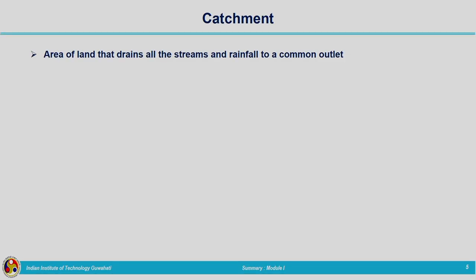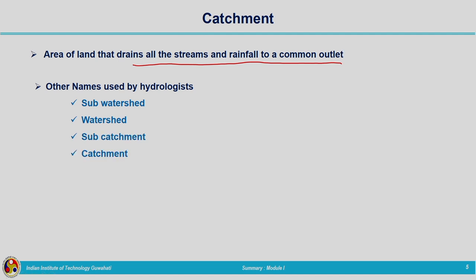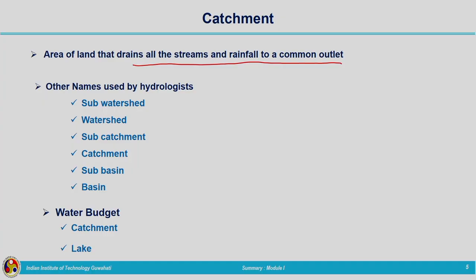Catchment is the area of land that drains all streams and rainfall to a common outlet point. All the water falling on that particular catchment is collected at one single outlet point, and the catchment has a well-defined boundary. Different names are used by hydrologists for this area: sub-watershed, watershed, subcatchment, catchment, subbasin, basin — but all these terminologies represent the area where water is collected at a single outlet point.